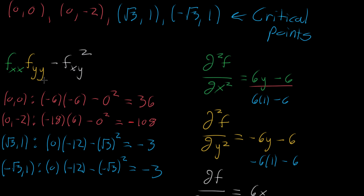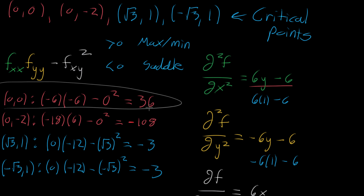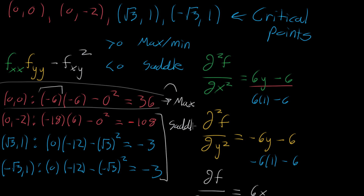So what does the second partial derivative test tell us? If the expression D is greater than zero, we have a max or a min. If it's less than zero, we have a saddle point. In this case, the only term that's greater than zero is the first one — the point (0,0). To analyze whether it's a maximum or minimum, notice that f_xx and f_yy were both negative, indicating negative concavity, meaning this corresponds to a local maximum. All of the other three gave us negative numbers, so they are all saddle points.